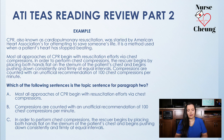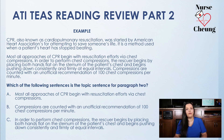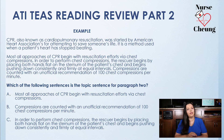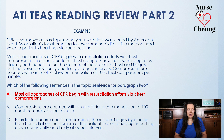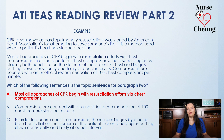So what is the topic sentence of that paragraph? Is it A — most all approaches of CPR begin with resuscitation efforts via chest compressions? B — compressions are counted with an unofficial recommendation of 100 chest compressions per minute? Or C — in order to perform chest compressions, the rescuer begins by placing both hands flat on the sternum of the patient's chest and begins pushing down consistently and firmly at equal intervals? The correct answer is A. Paragraph 2 focuses on how to give effective chest compressions. Choices B and C are really much more of supporting details to the main idea.